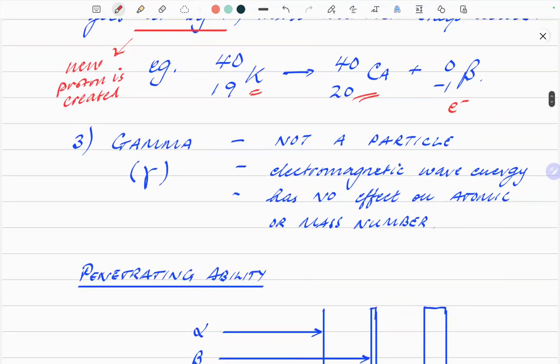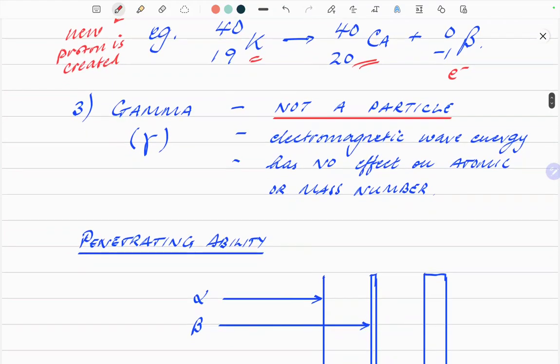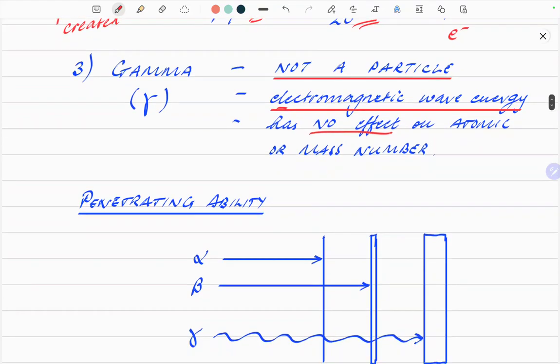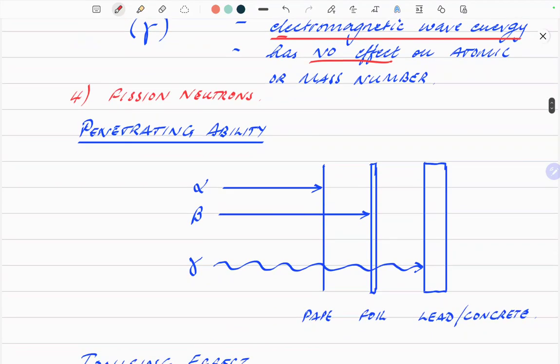Gamma is a third type and this is not a particle. The other two were particles. This is not a particle. This is electromagnetic wave energy. So it's basically waves being given out. Has no effect on the atomic or mass number. It's just energy being given out in wave form. There is a fourth that I've left out because I want to come back to it later. It's called fission neutrons, a different type of radioactivity which I'll address at the end of the video.